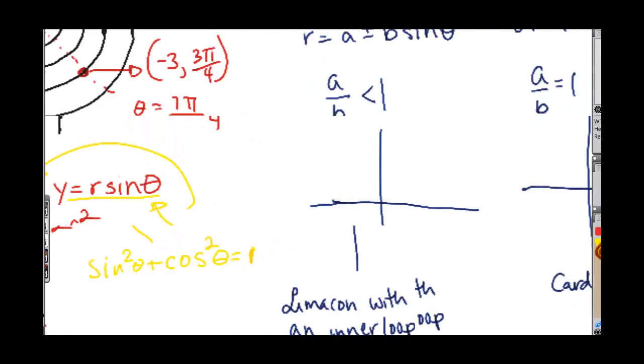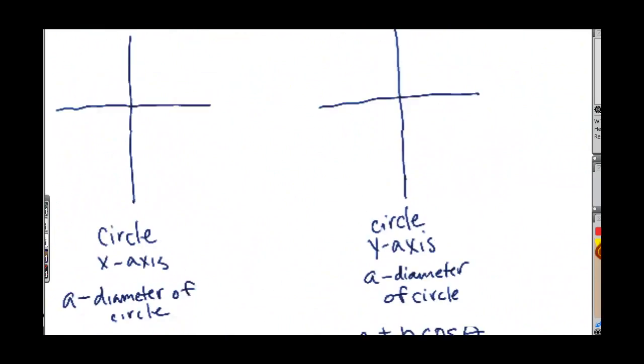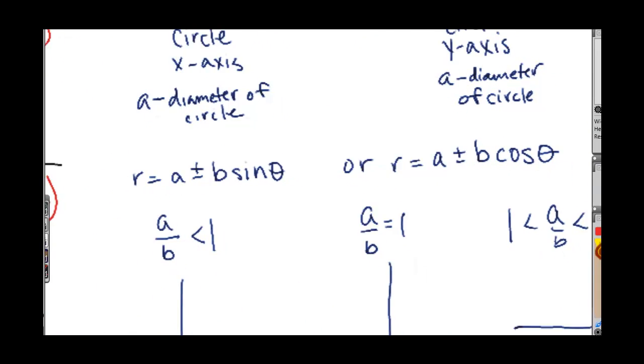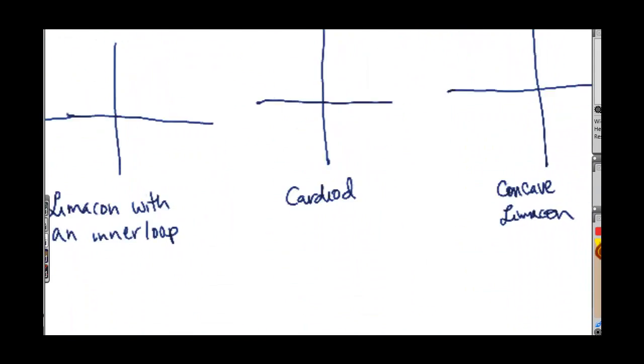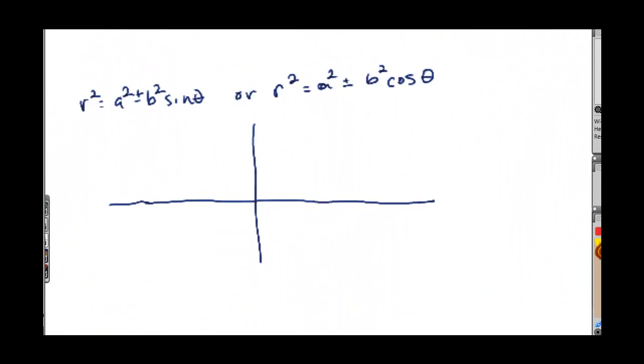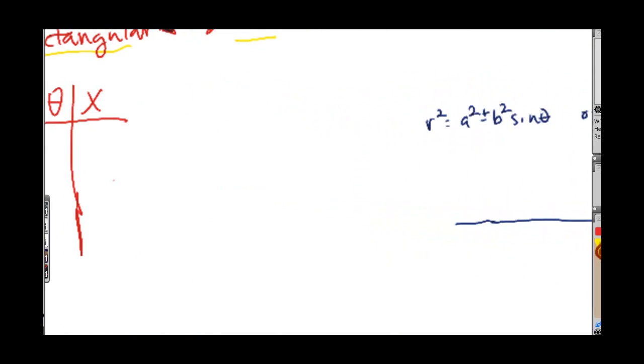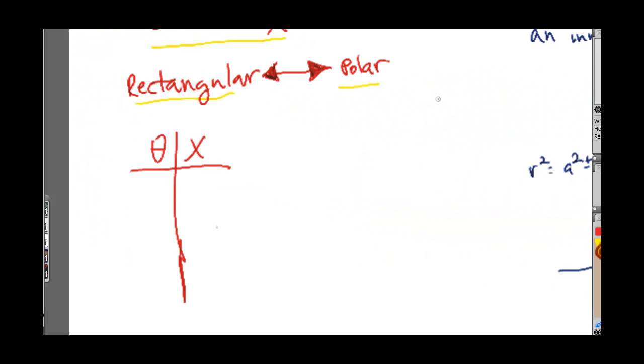So there are a bunch of basic formulas that we're about to go through that if you memorize them, your life will be so much easier when it comes to polar graphing and how to do that. But before we do that, we should discuss something called tangents at the pole.